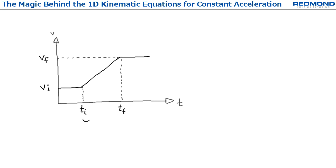Then we get delta T is equal to Tf minus Ti and delta V is equal to Vf minus Vi. For the first equation, I start with the definition of average acceleration, which is delta V over delta T.